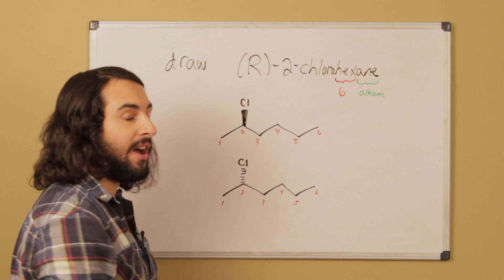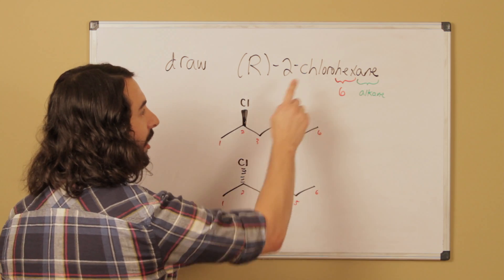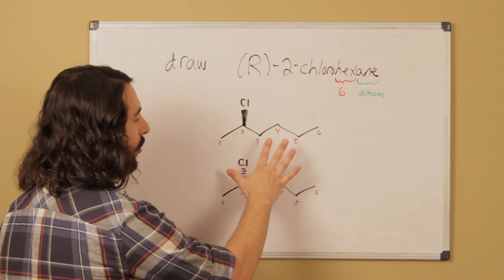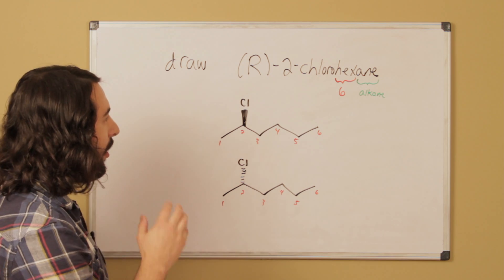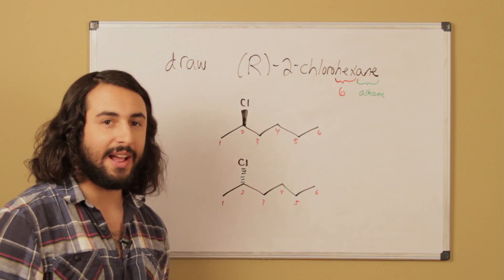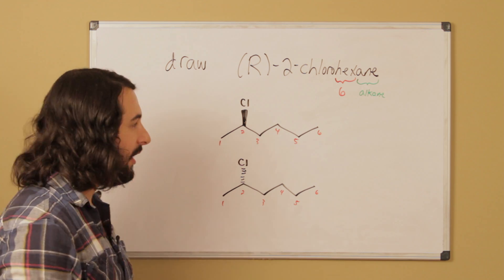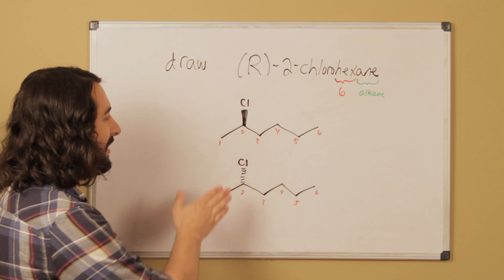We also know that on carbon two there will be a chloro group. I've drawn the two possibilities for 2-chlorohexane, and so what we also want to be able to do is draw the one that has R stereochemistry.